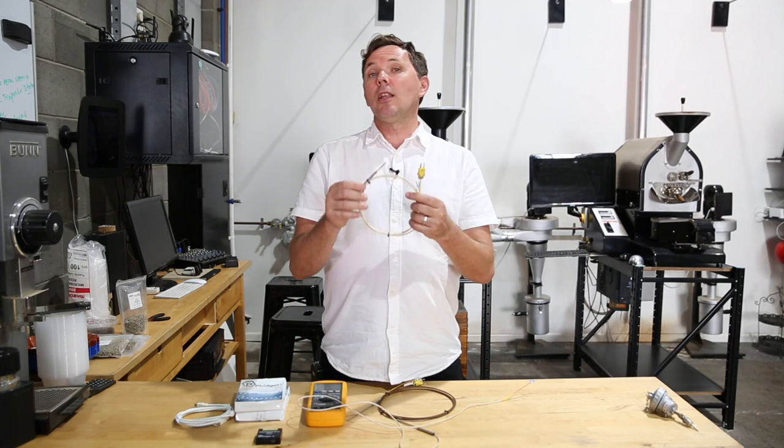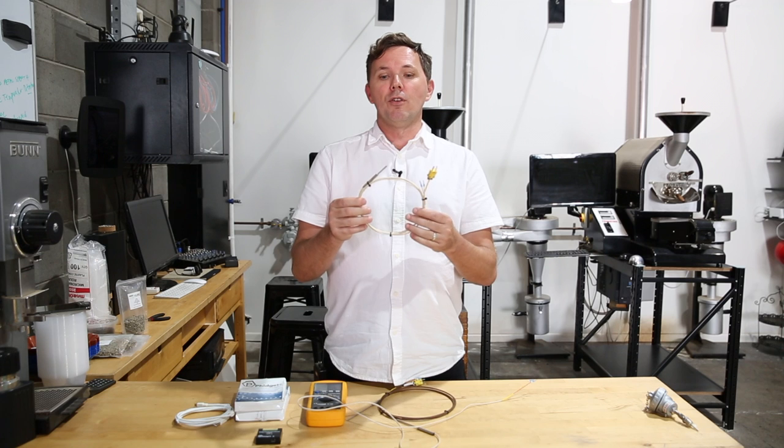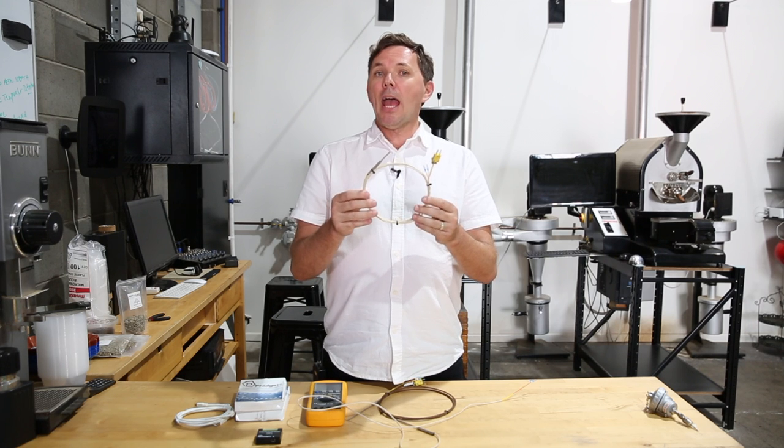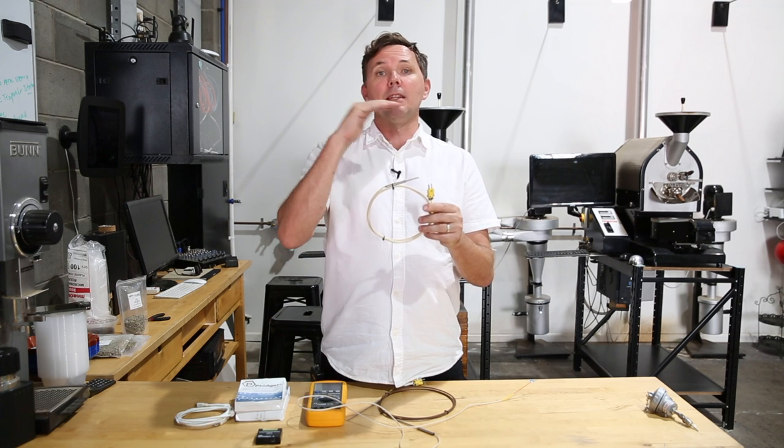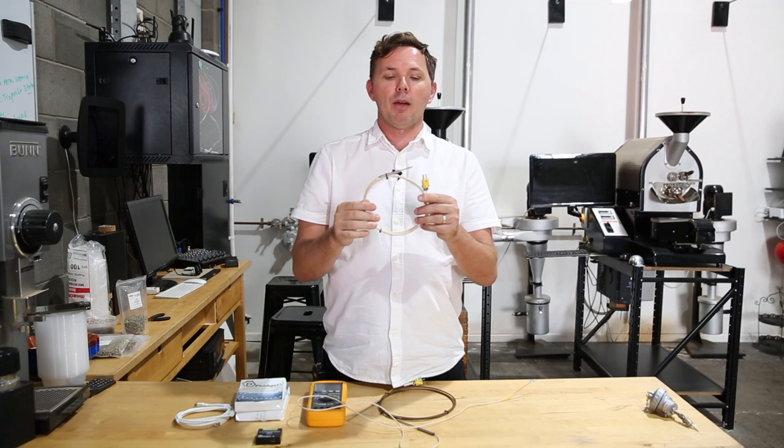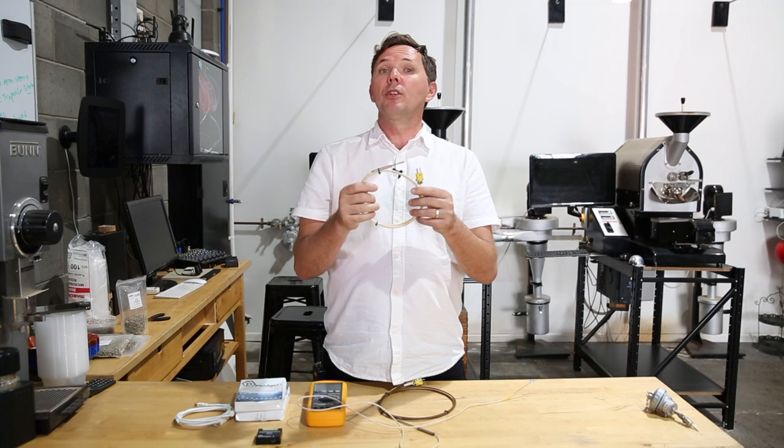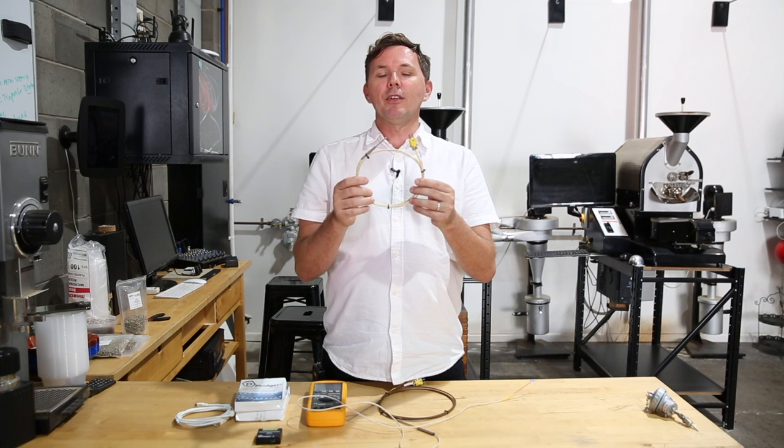Most of these ones I particularly like because you can use it for a bean and air temperature probe, particularly if you only have the one probe in your roaster and it's sitting in the middle of the roaster, so halfway up the drum face. It's a really good kind of all-rounder. Very sturdy and robust.